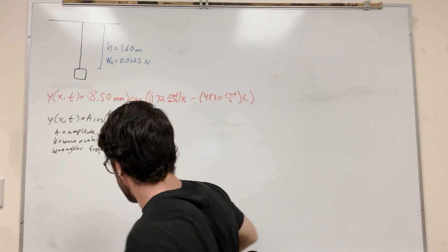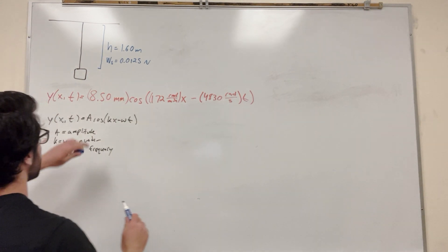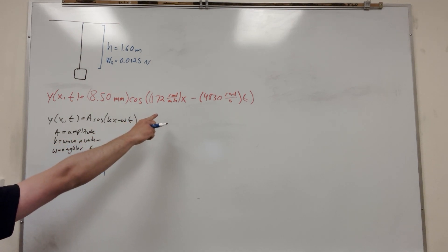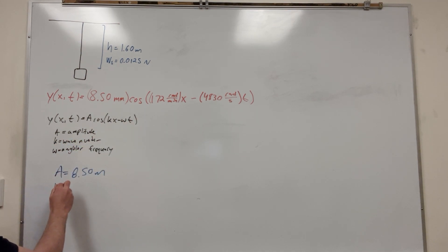So from this, we can determine that the amplitude of our wave is just this a value here. So a is equal to 8.50 millimeters, and it gives us that k is equal to 172 radians a meter, and that our angular frequency ω is equal to 4830 radians a second.